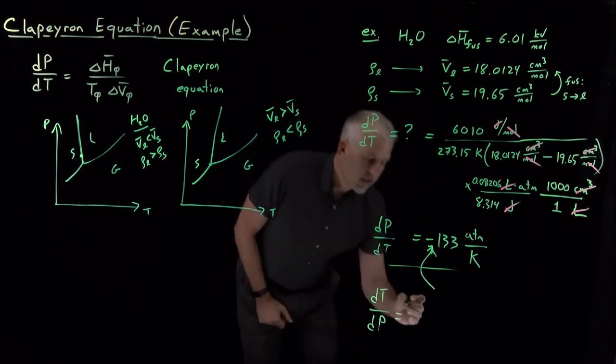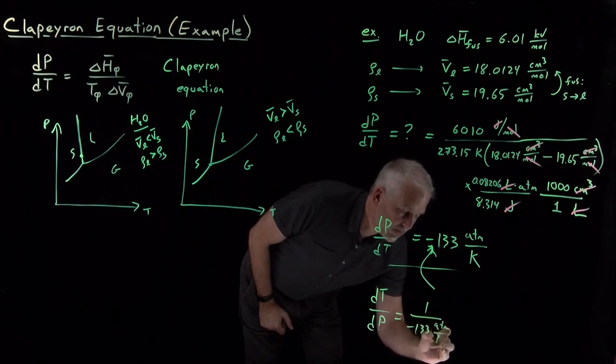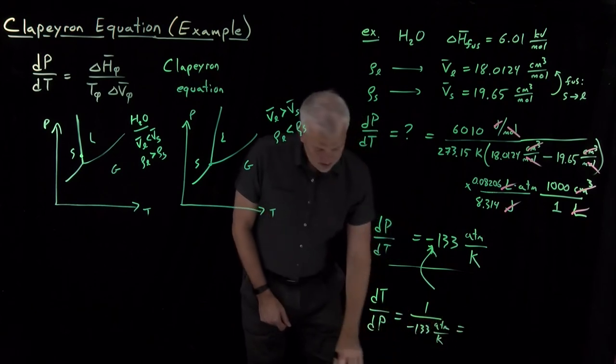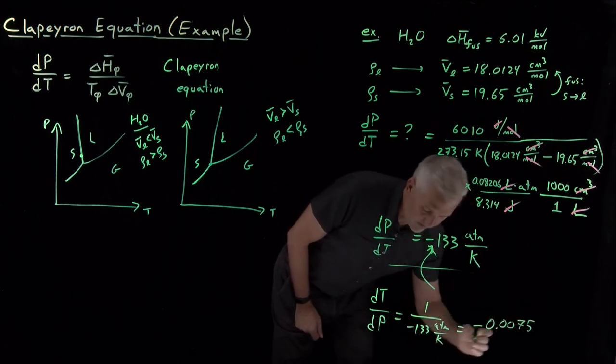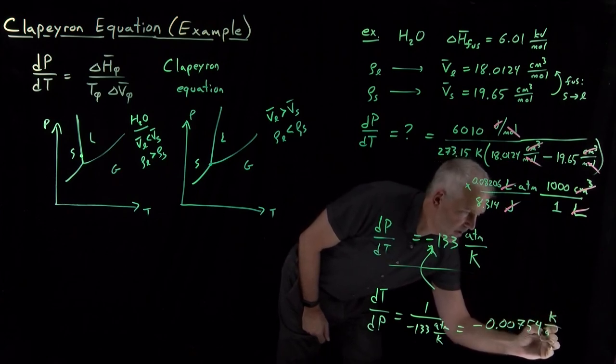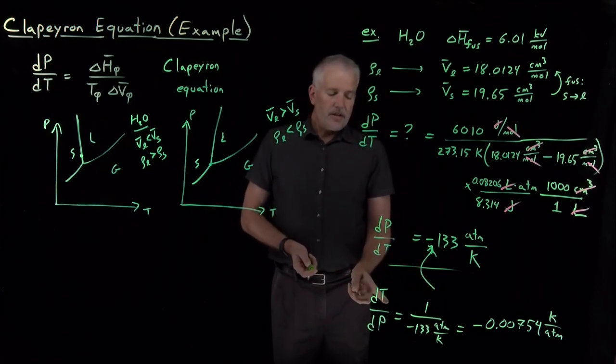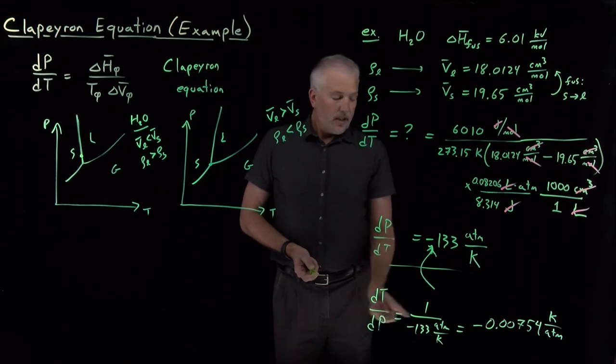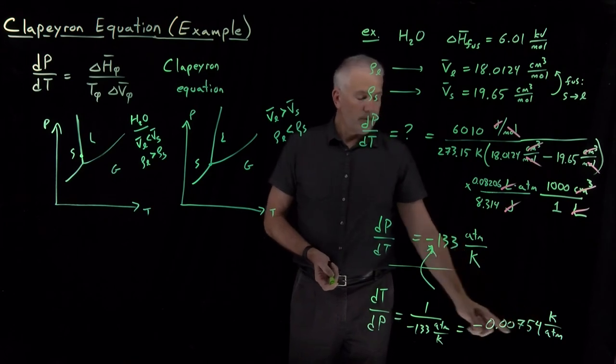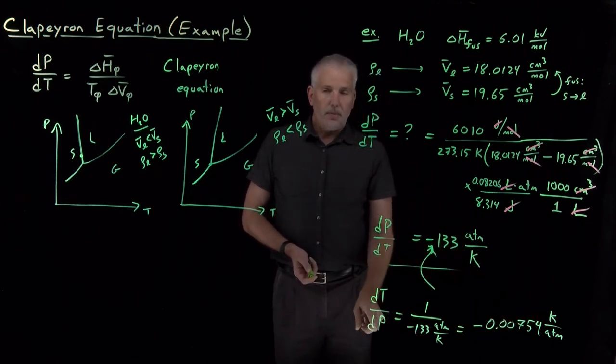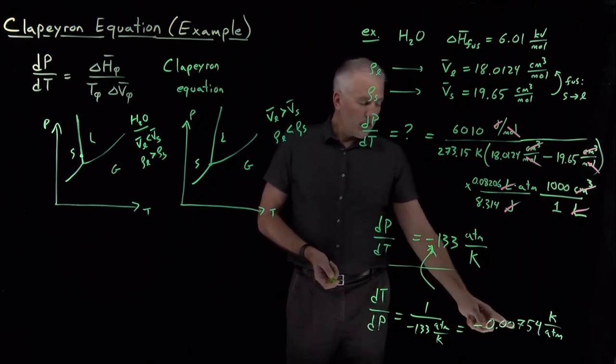I've turned this derivative upside down, so that's going to be 1 over negative 133 atmospheres per kelvin, and that's going to work out to still negative, but now a fairly small number instead of a large number. That one's easier to think about physically. The change in the temperature of fusion, the change in the melting point, is negative, let's call that negative a little less than a hundredth of a kelvin per atmosphere. If I change the pressure by one atmosphere, I'm going to change the melting point by negative 0.00754 kelvin.